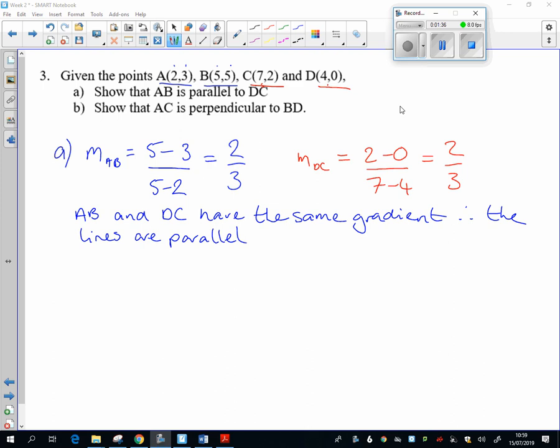Okay, for part b, I'm trying to show that two lines are perpendicular, so that means that the product of their gradients must equal negative one. So I need to work out the gradient of AC.